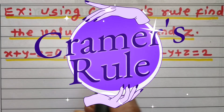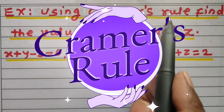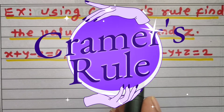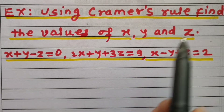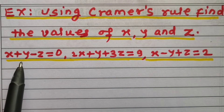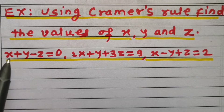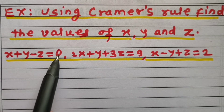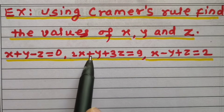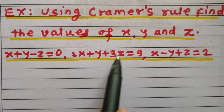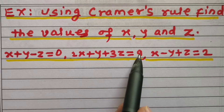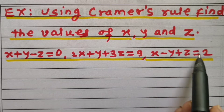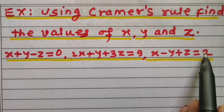Using Cramer's rule, find the values of x, y, and z, if the three equations are given like this: x plus y minus z is equal to 0. Second equation is 2x plus y plus 3z is equal to 9. And the third equation is x minus y plus z is equal to 2.